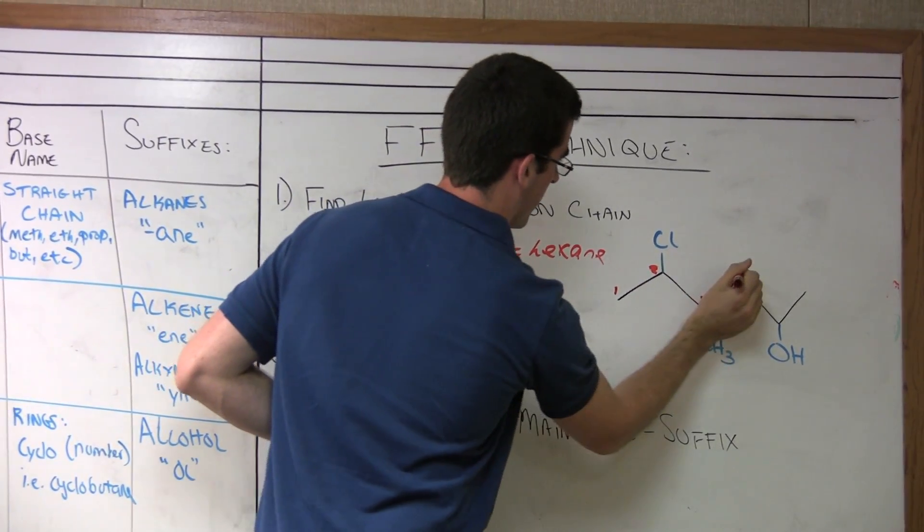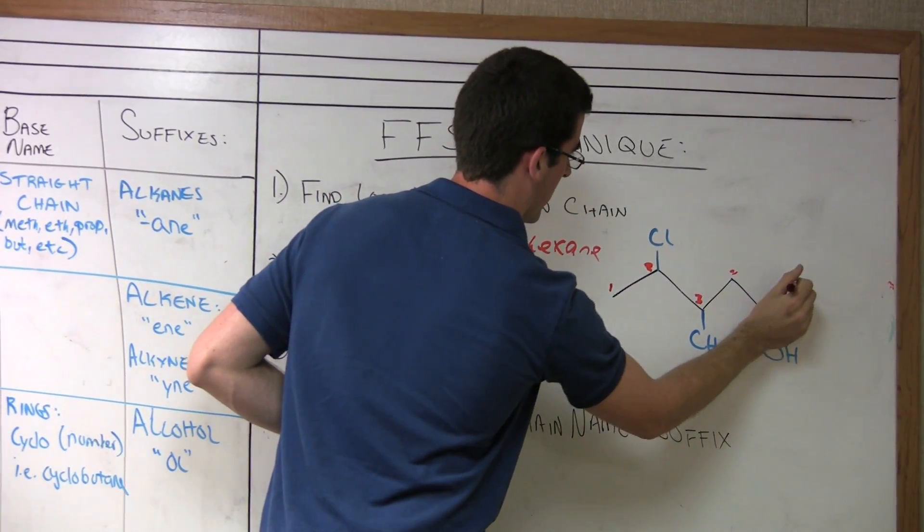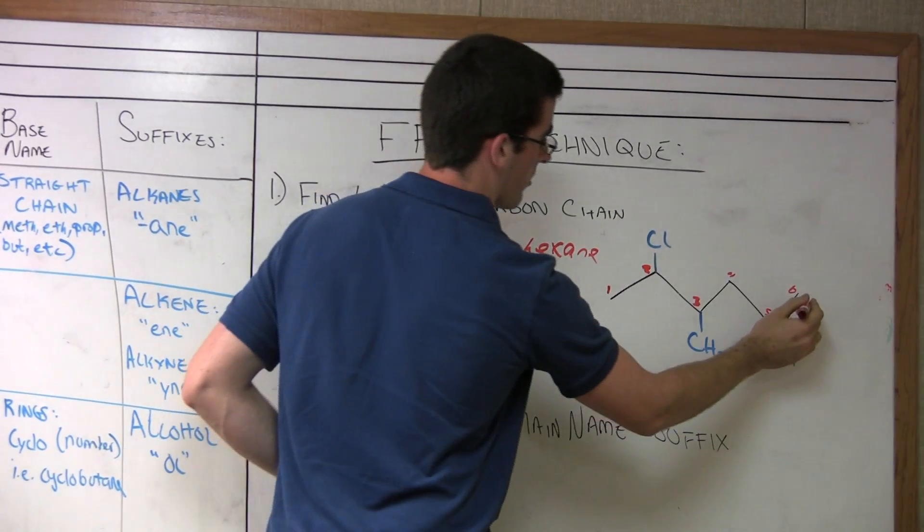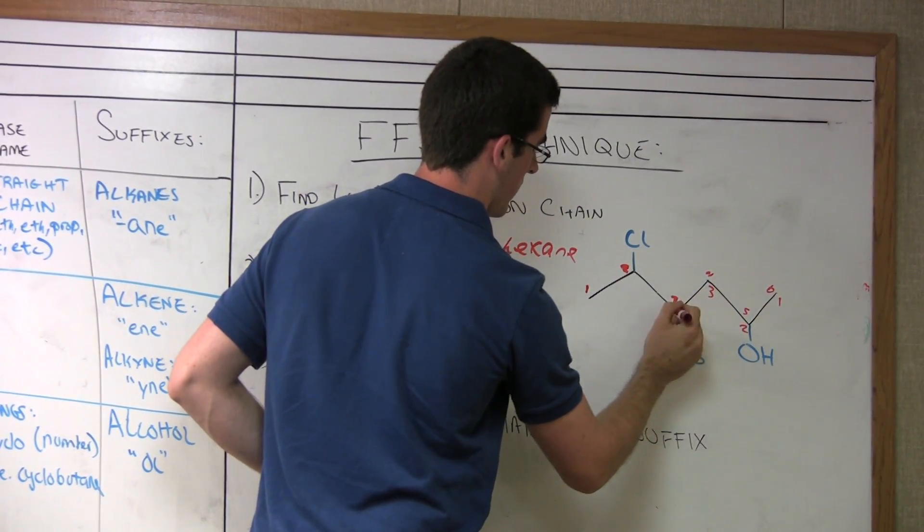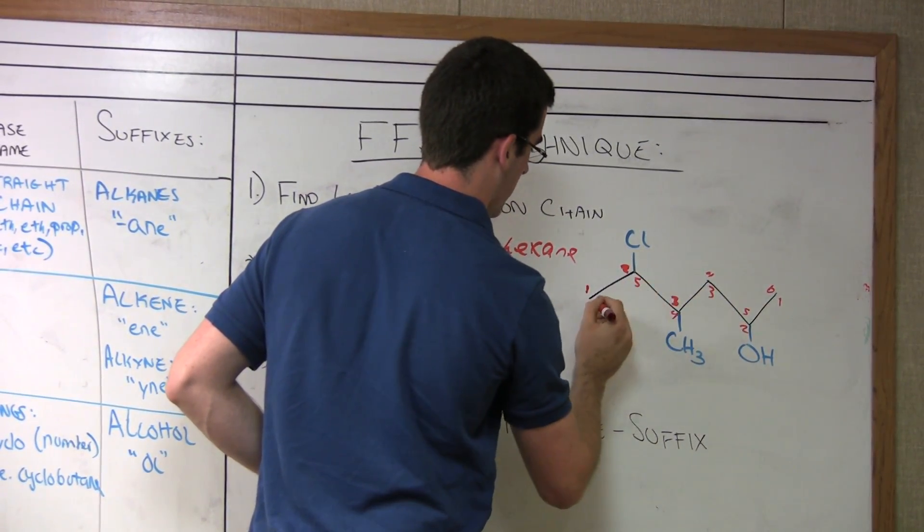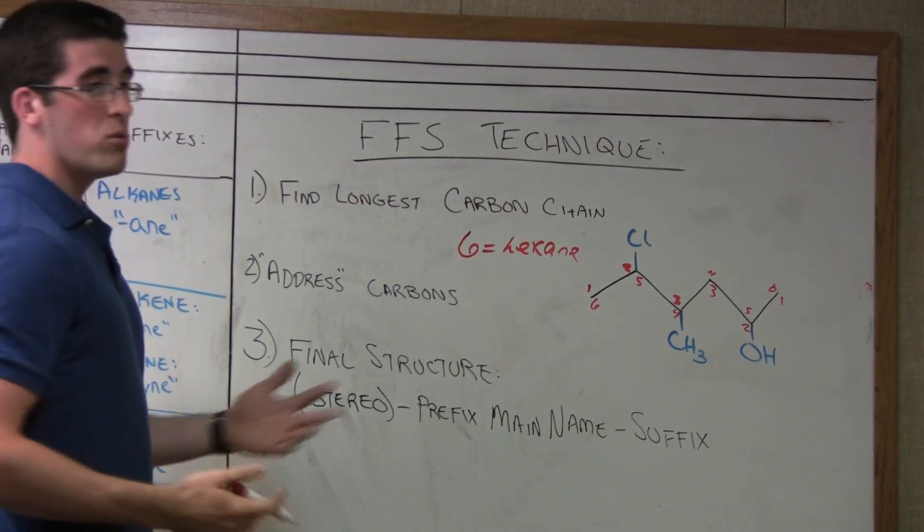we put one, two, three, four, five, six. Or we can go from right to left: one, two, three, four, five, six. So we have two ways we can number this.